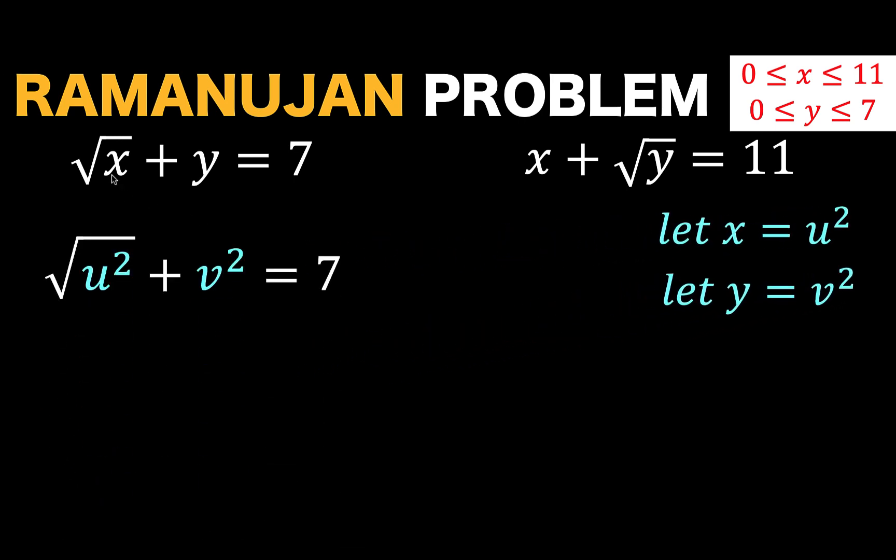And with this assignment of this substituted value, we can now rewrite the first equation as the square root of u squared plus v squared, which is simply u plus v squared equals 7. Technically, this should be the absolute value of u plus v squared equals 7. But since we restrict x to be greater than or equal to 0, let's just deal with the positive u plus v squared equals 7. Then solving for u, we have u equals 7 minus v squared.